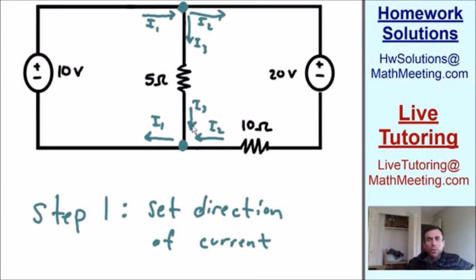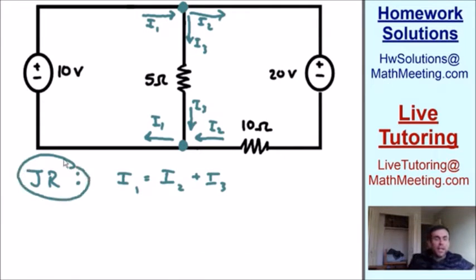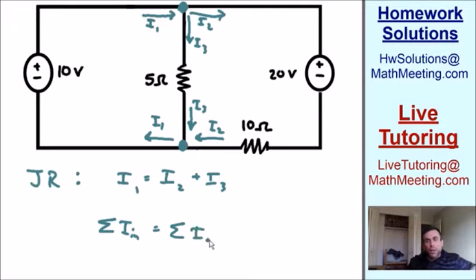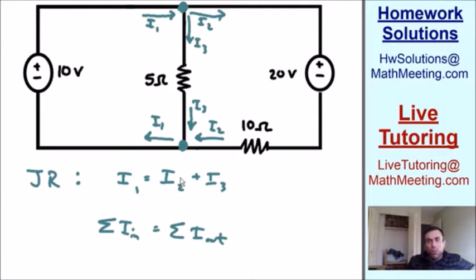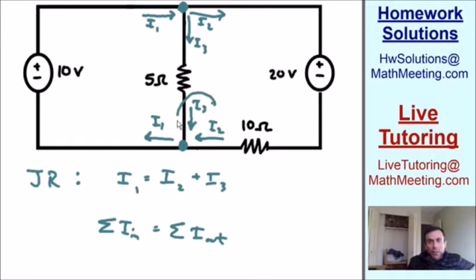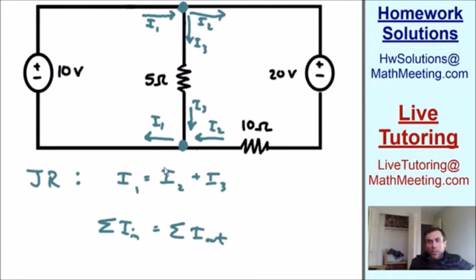Step number two is to make equations using the Junction Rule, abbreviated JR, which states that the sum of the currents going in is equal to the sum of the currents going out. I1, going into our top junction, is equal to I2 and I3 going out. The same applies to the bottom junction: I2 and I3 go in, and I1 goes out. So I1 is equal to I2 plus I3.